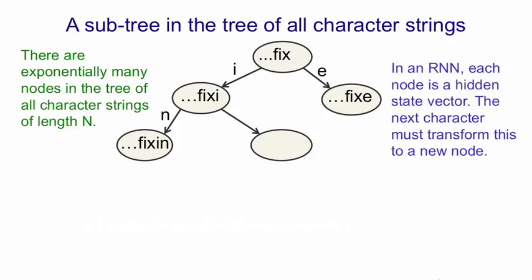In an RNN, we try and deal with the fact that the full tree is enormous by using a hidden state vector to represent each of these nodes. So now what the next character has to do is take the hidden state vector that's representing a whole string of characters followed by F I X, and operate on that hidden state vector to produce the appropriate new hidden state vector if the next character was an I.